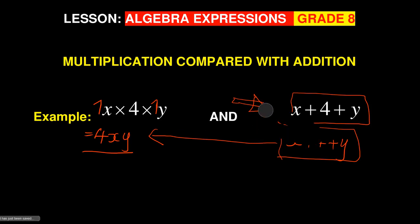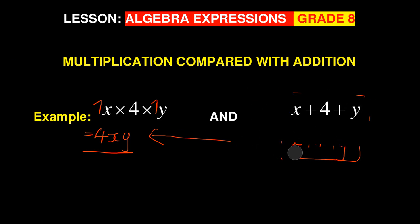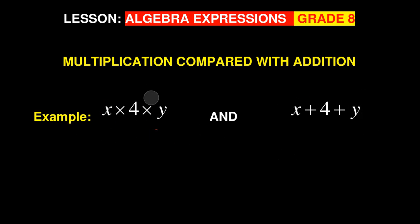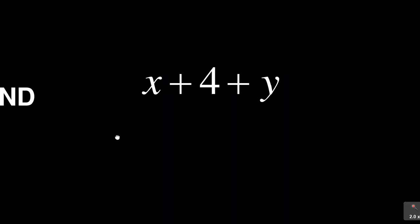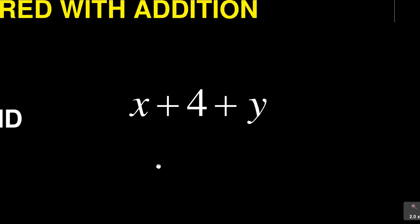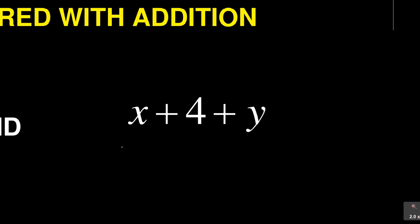Now for addition: x plus 4 plus y. Remember, you can only add things that are the same — just like you can't add a sheep, a cow, and a dog together. Because x, 4, and y are all different, this is as far as it can go. The final answer remains x plus 4 plus y. Do not be tempted to simplify further; it is complete as it is.